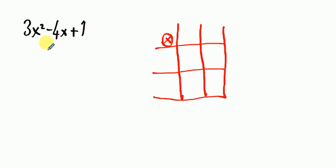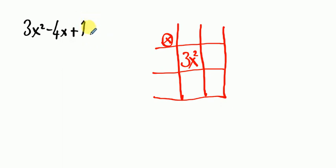The first term is 3x squared — we are going to fill in the first box with 3x squared. What about the term without x? It is 1. Let me write it here.